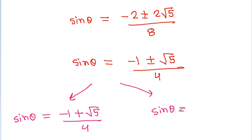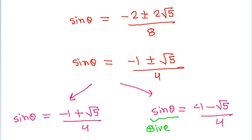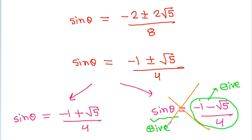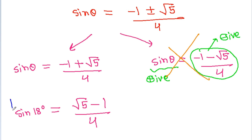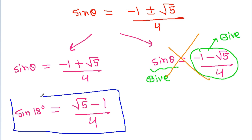The two values are sin theta equals (−1 + √5)/4 and sin theta equals (−1 − √5)/4. Since theta is 18 degrees, sin theta must be positive, so the second value (−1 − √5)/4 is not possible. Therefore, sin 18 degrees equals (√5 − 1) / 4.